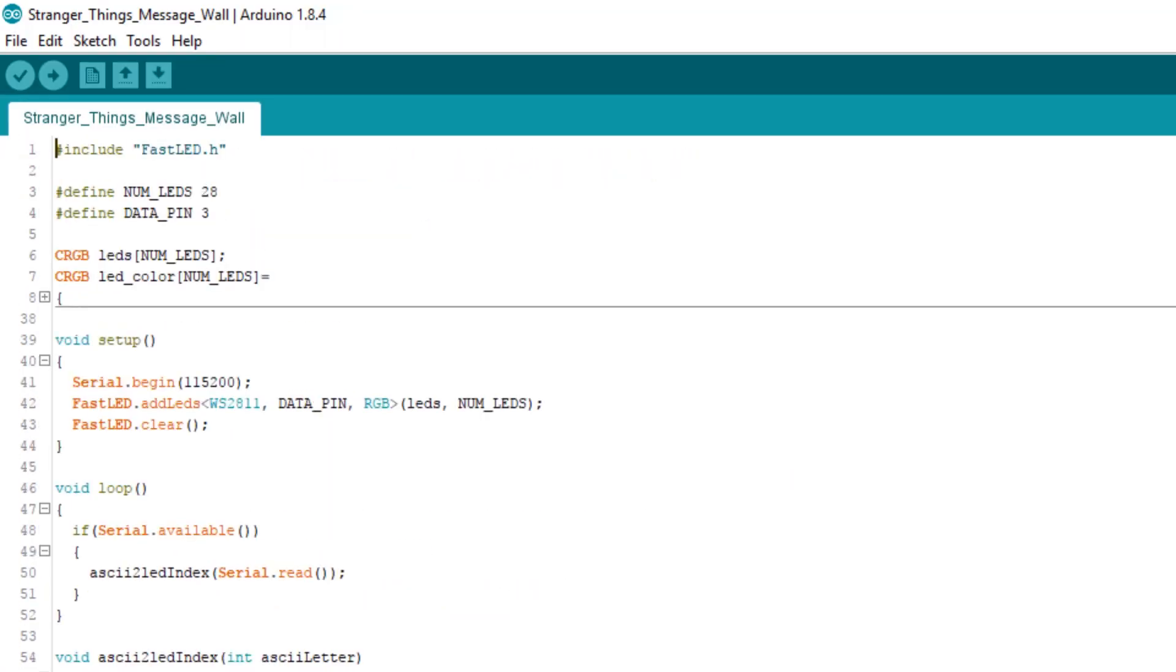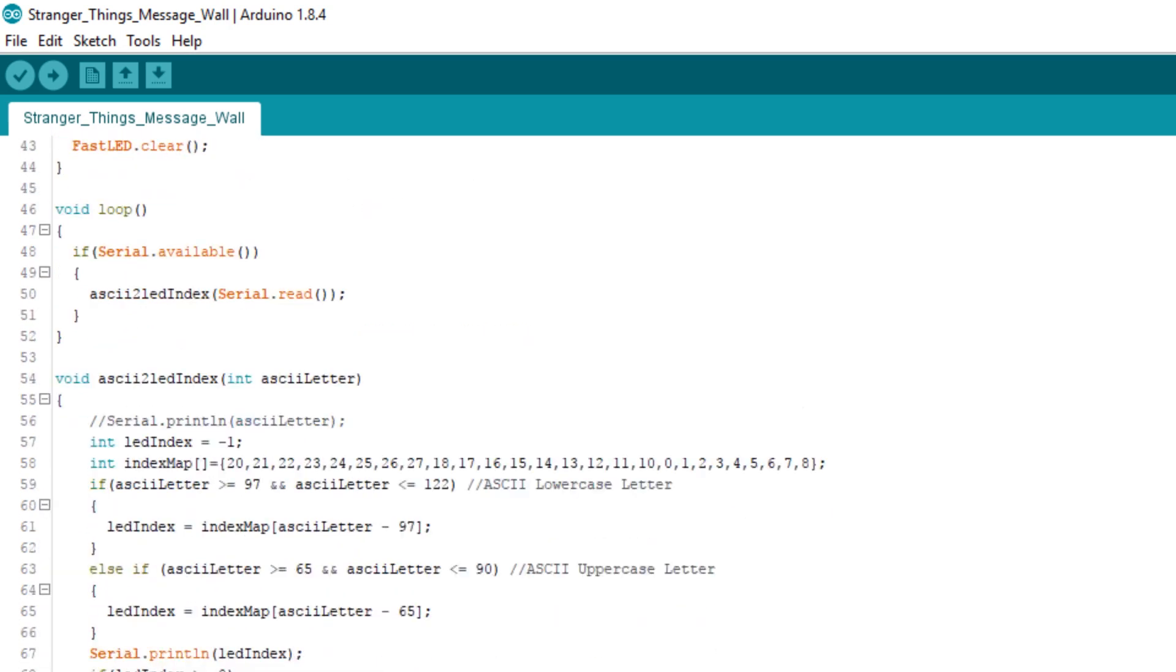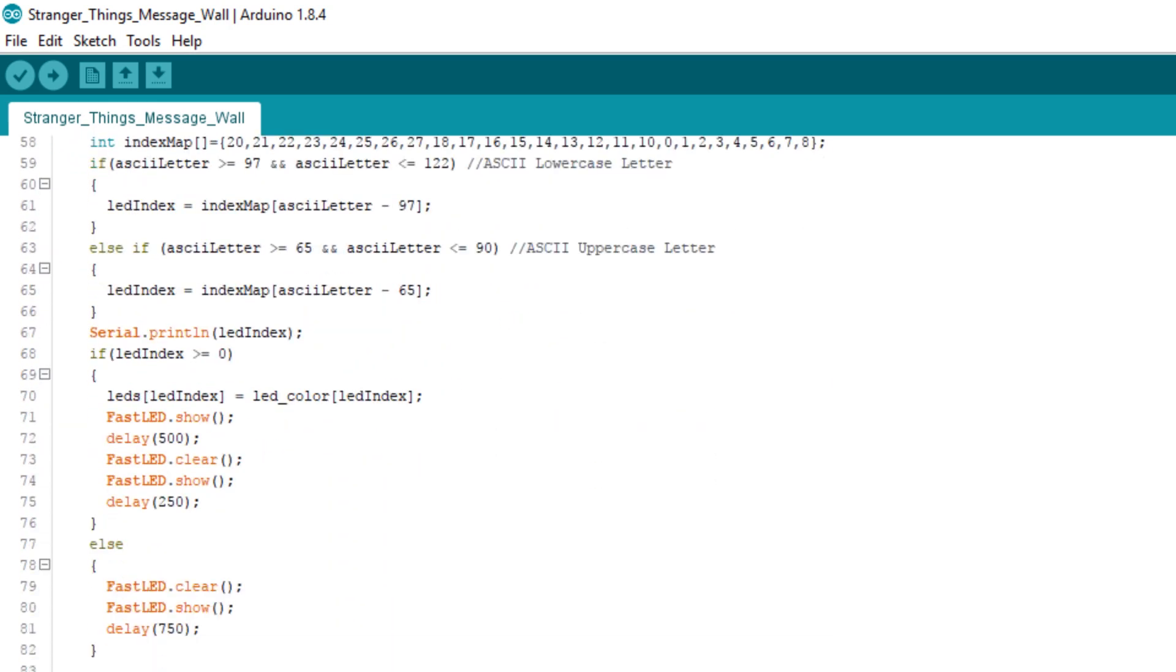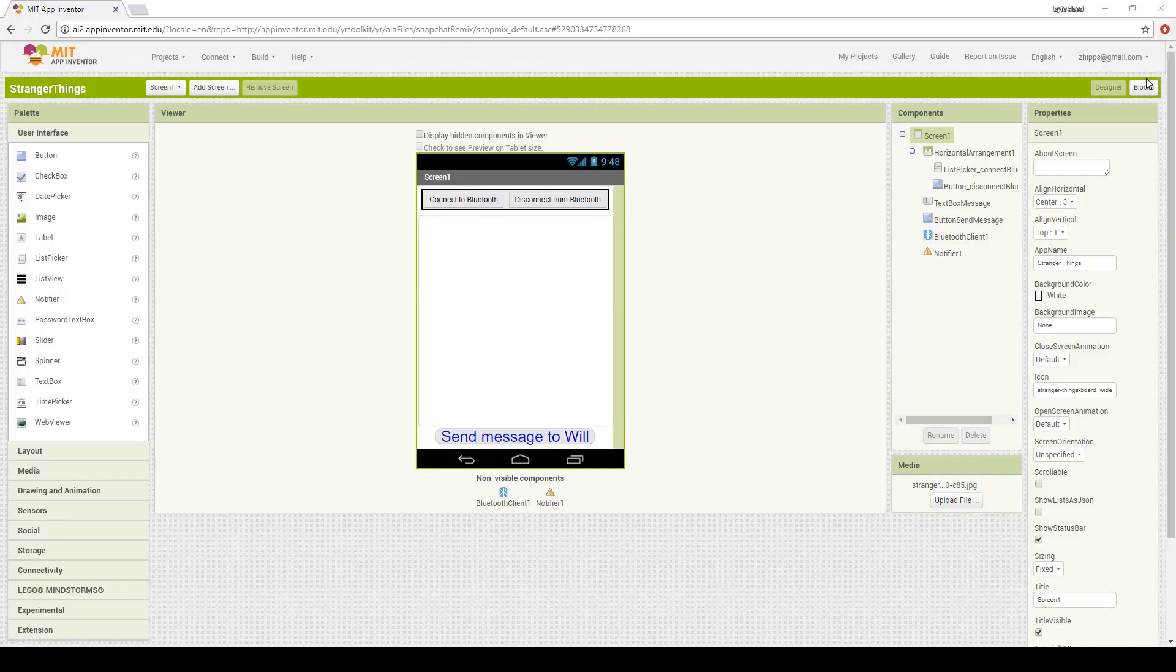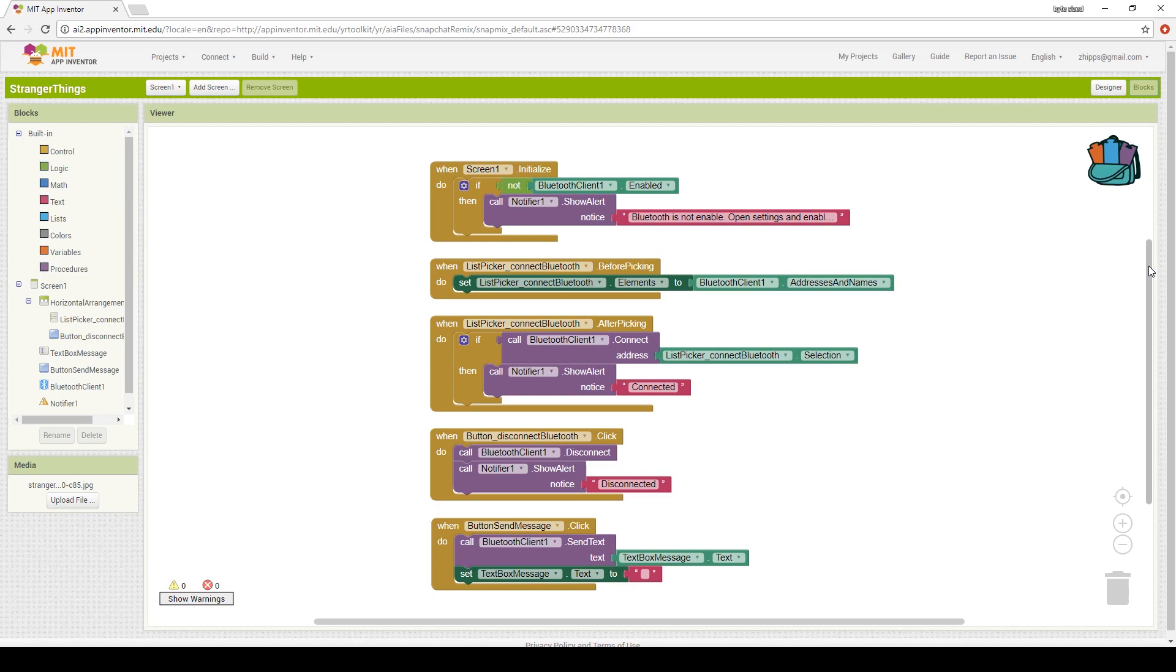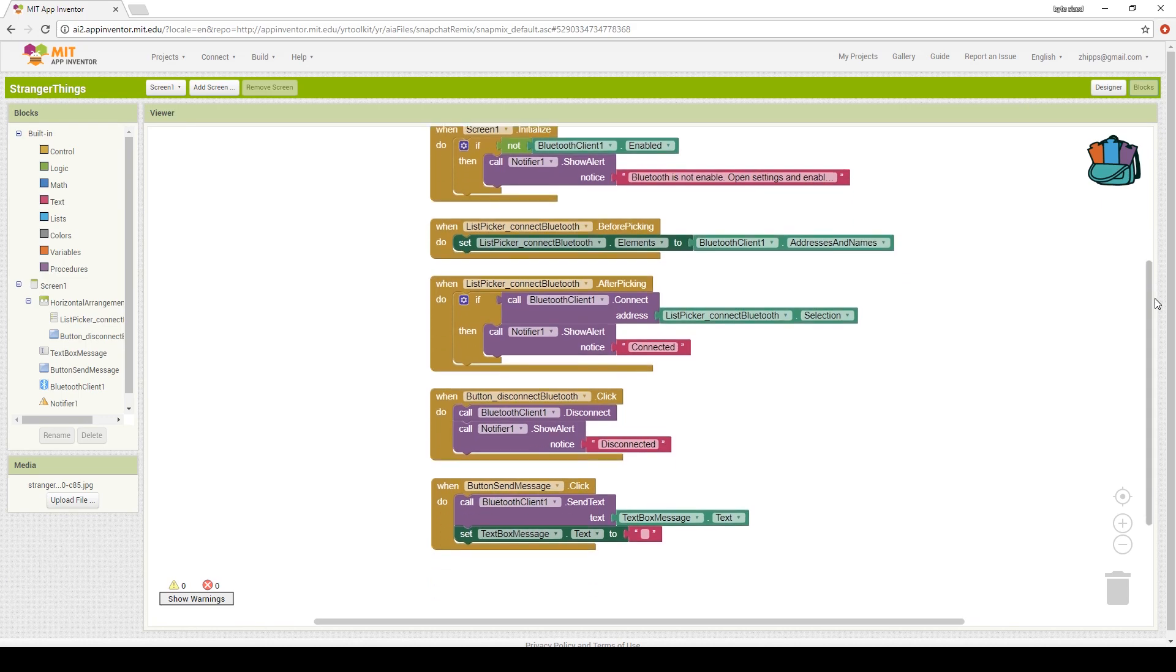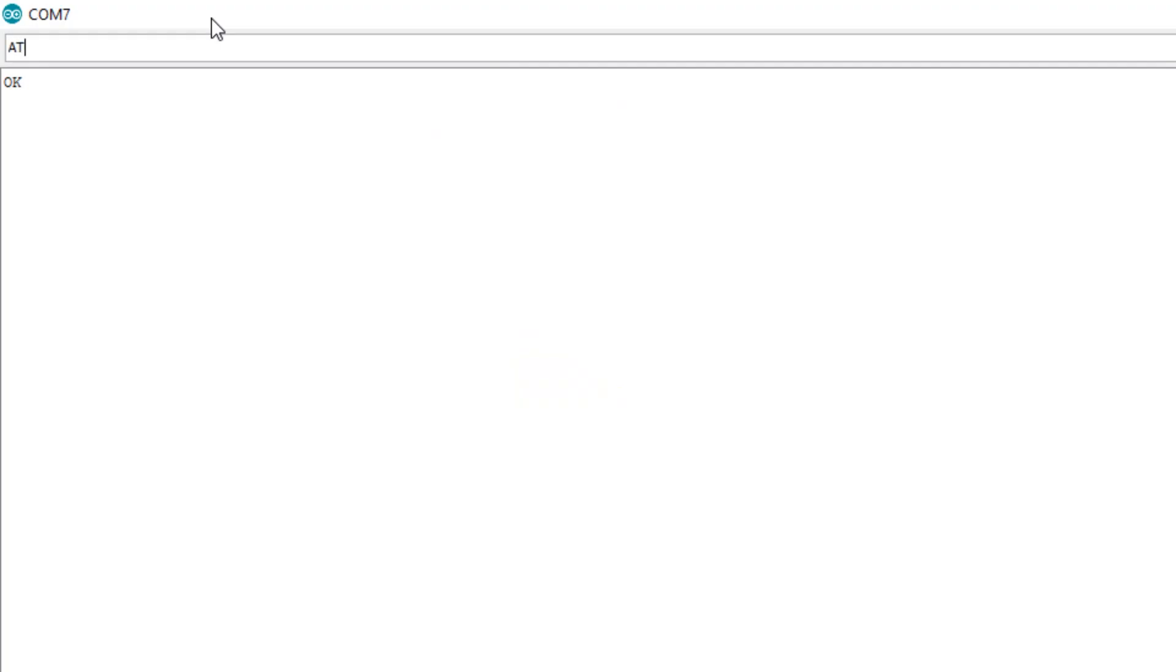The Arduino sketch takes incoming messages on the serial port and translates them into the appropriate LED blinks. I used MIT App Inventor to drag and drop blocks of code to create a simple messaging app for my phone. The last thing I wanted to do was to program the Bluetooth module with the name of Will Byers and give it a password of 11 because, you know, 11.